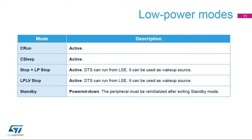The digital-to-analog converter is active in the following low-power modes: CRUN, C-SLEEP, STOP, LP-STOP, and LPLV-STOP. In standby mode, the DAC is powered down and it must be re-initialized afterwards.